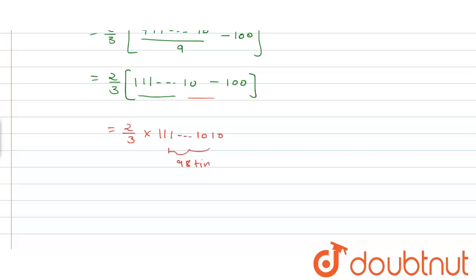By solving further, we get (1/3) × 222...2020, where this pattern repeats 98 times.